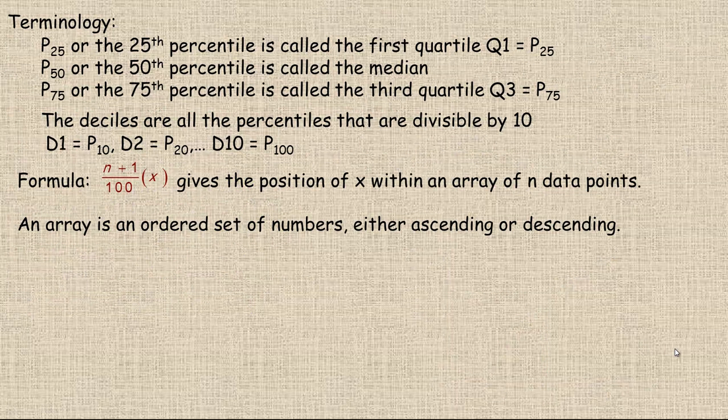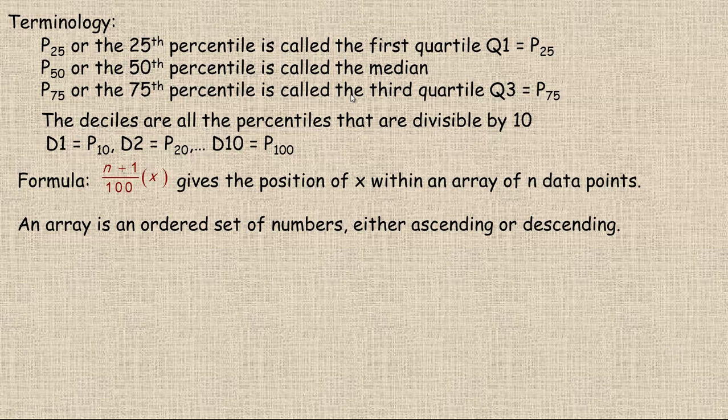A little bit of terminology before we get an example showing how to calculate percentiles. P sub 25 stands for the 25th percentile, and there's a couple specific names for certain percentiles. That's called the lower or first quartile, so Q1 represents the 25th percentile. The 50th percentile, P50, is called the median. P75, or the 75th percentile, is called the third quartile. So Q3, the third quartile, is the 75th percentile. The deciles are all the percentiles that are divisible by 10. For example, the 10th percentile is the first decile. The second decile is the 20th percentile. The 100th percentile would be D10, or the 10th decile.